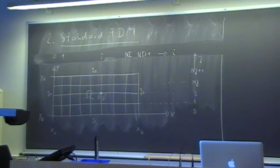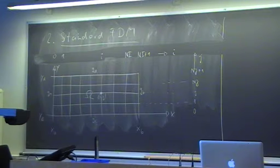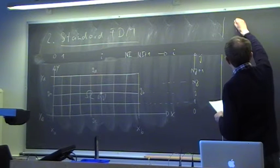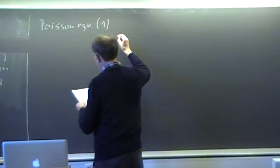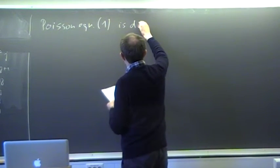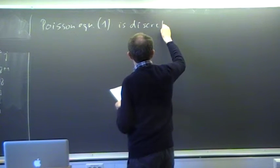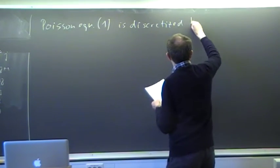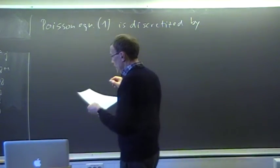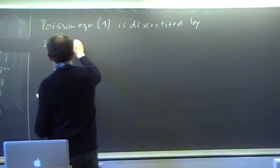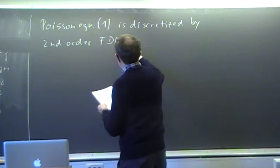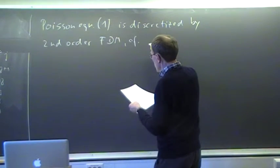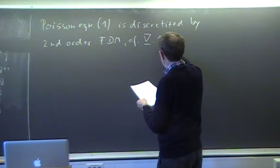We have now seen the Poisson equation and our grid points. Now we do the discretization. The Poisson equation is discretized by the second-order finite difference method that we already discussed at the beginning, in file 1.